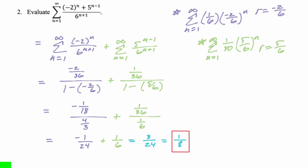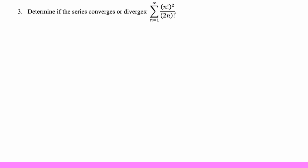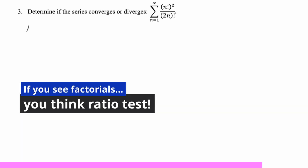So this whole series has a sum of 1/8. It's a scary-looking thing, but it's just geometric. Now let's determine if the next series converges or diverges: n factorial squared over (2n) factorial. I'm never good at guessing these, so I'll use a ratio test. Anytime you see factorials, start with the ratio test.